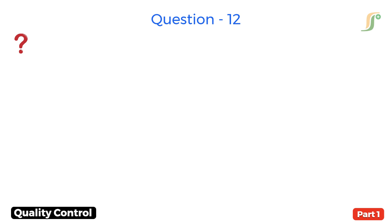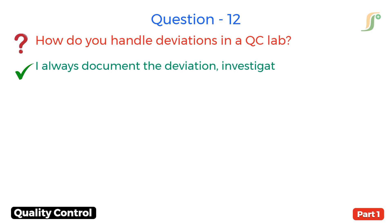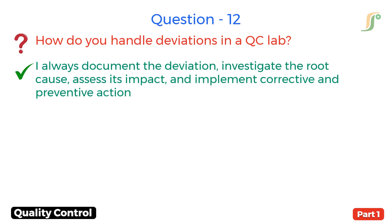Question 12. How do you handle deviations in a QC lab? Answer. I document the deviation, investigate the root cause, assess its impact, and implement corrective and preventive actions.